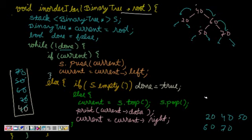Done is set to true, we don't enter the loop again. We have the in-order traversal in ascending order for the binary search tree. This was about in-order traversal using the iterative method. I hope you understood it - if you like this video please subscribe to my YouTube channel and share it with your friends.